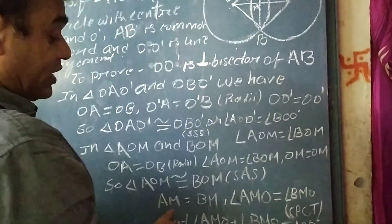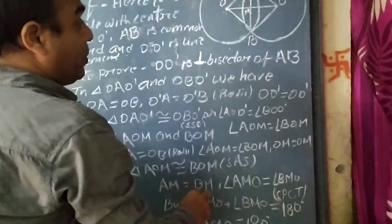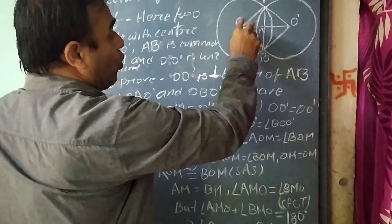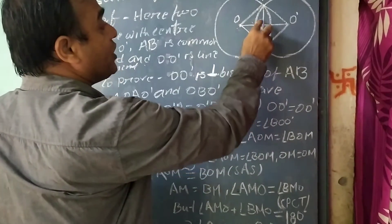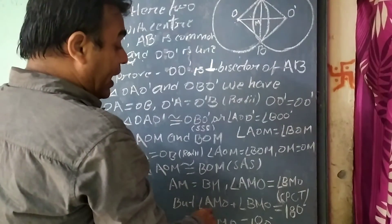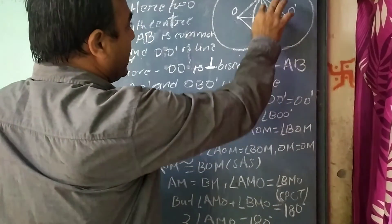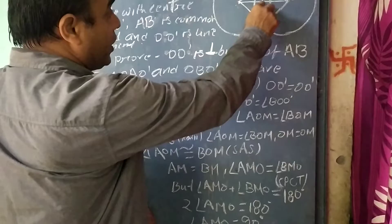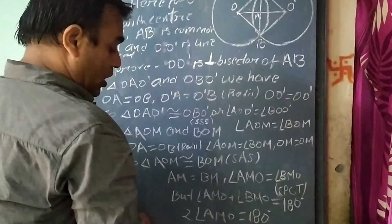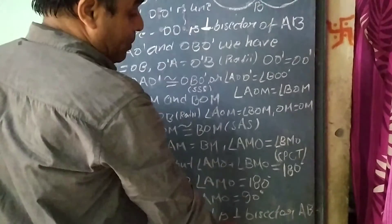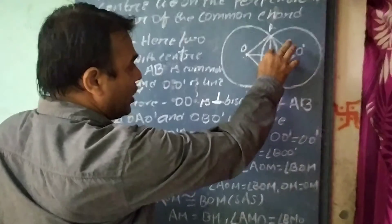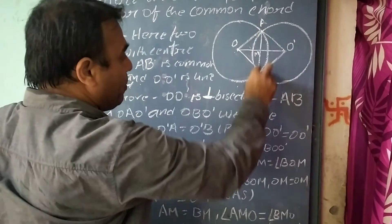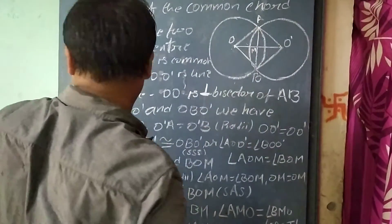So their corresponding parts are also equal: AM equal to BM, and angle AMO equal to angle BMO. But angle AMO plus angle BMO equals 180 degrees — these are linear pairs. So 2 times angle AMO equals 180 degrees, therefore angle AMO equals 90 degrees. So OM is perpendicular, meaning OO dash is the perpendicular bisector of AB, bisecting AB at 90 degrees.